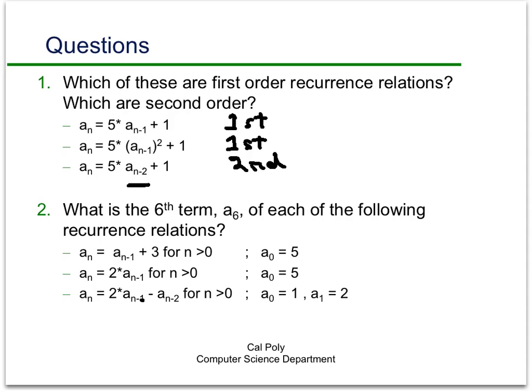In the third example here, a_n is equal to 5 times a_(n-2) + 1, we're going back two steps. Even though there's only one term, we need to go back two steps, so this is a second-order recurrence relation. Looking at this next set of questions, this is just an exercise to make sure that you know how to calculate succeeding terms in a recurrence relation when its formula is specified. This first one, we're adding three at each step, so this is an arithmetic progression. If you calculate this out, you'll see that it's going to be 23 will be the sixth term.